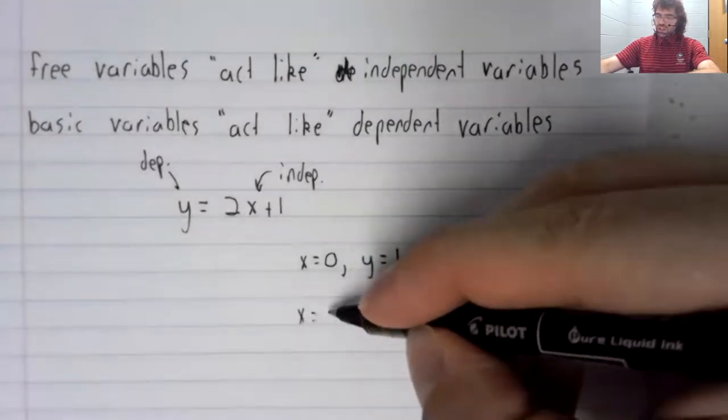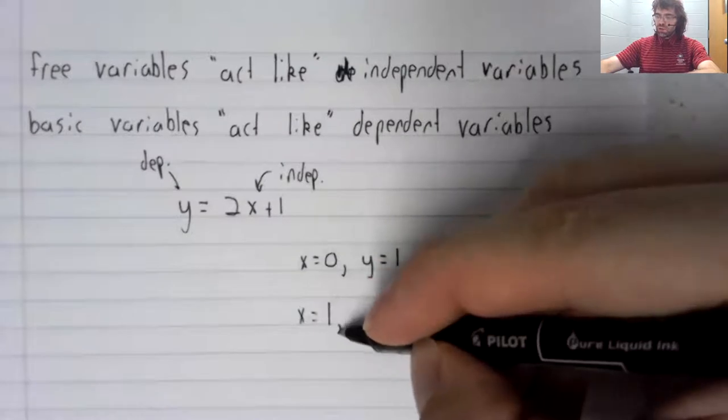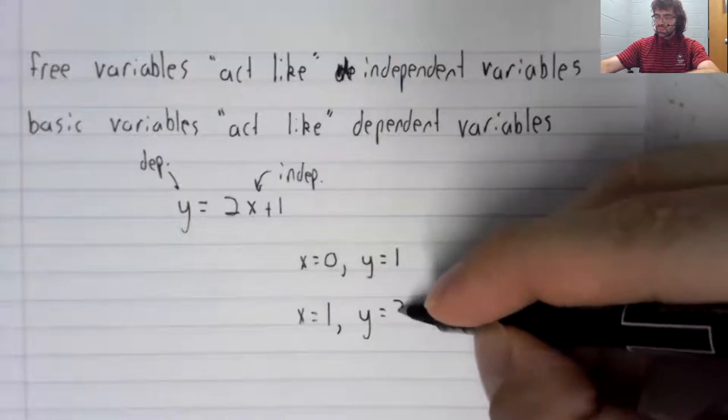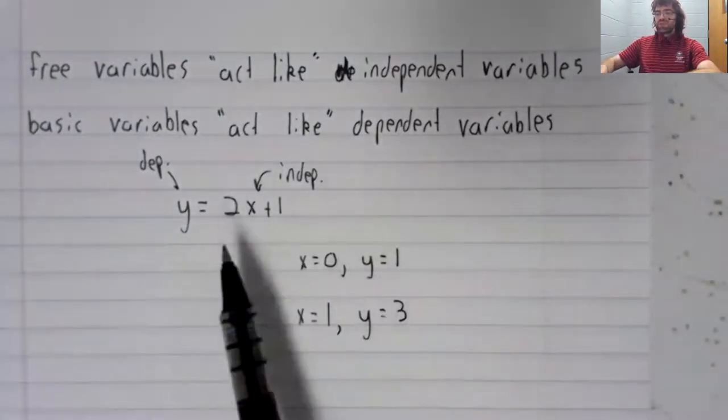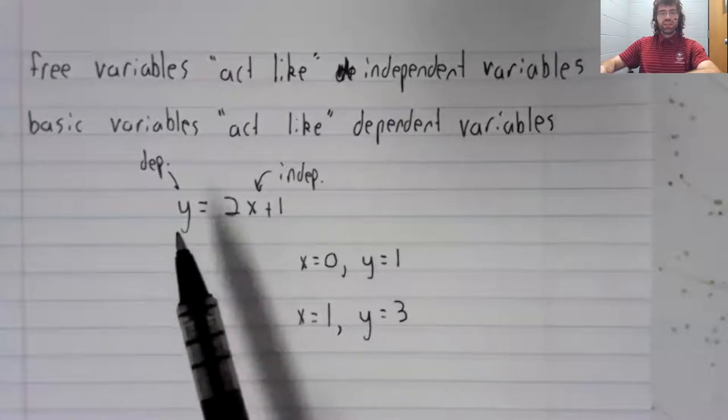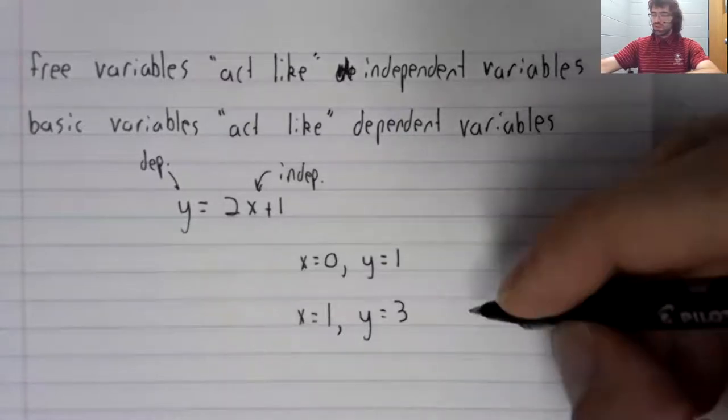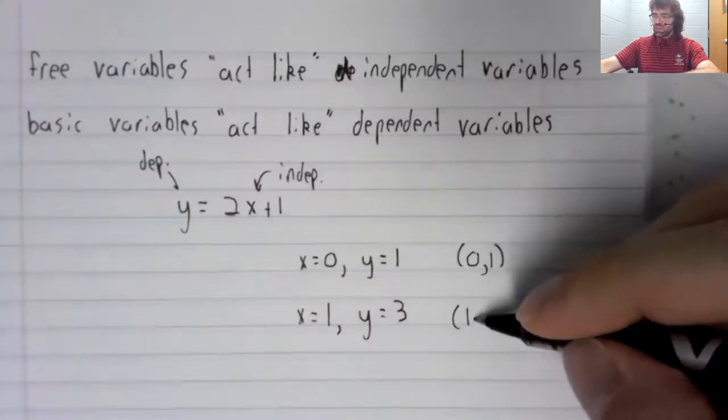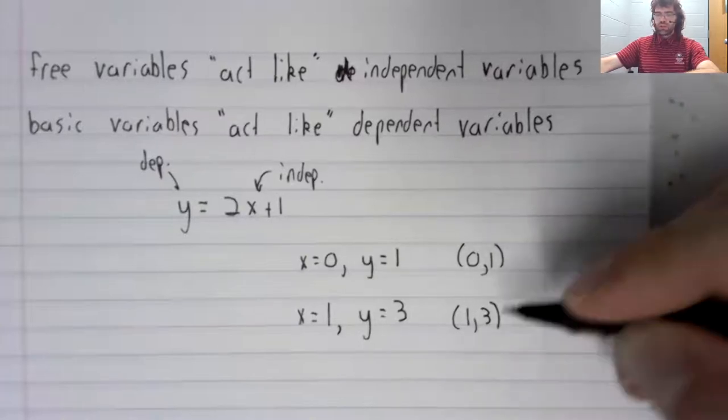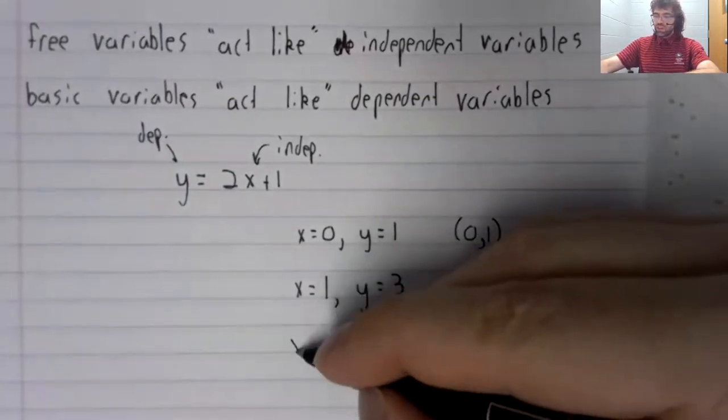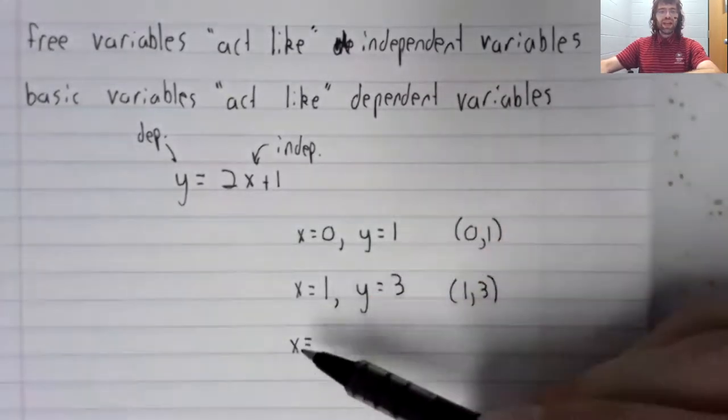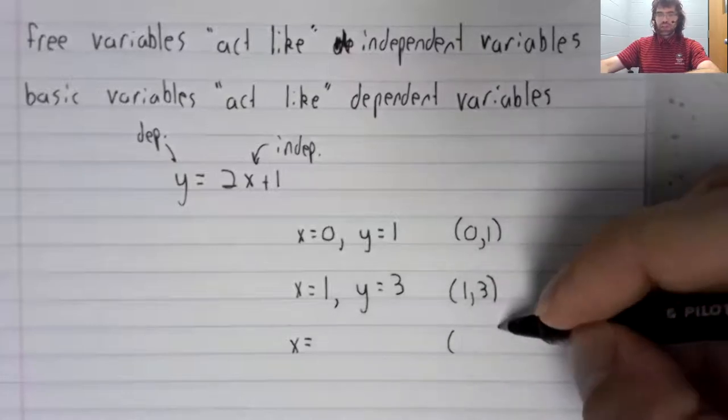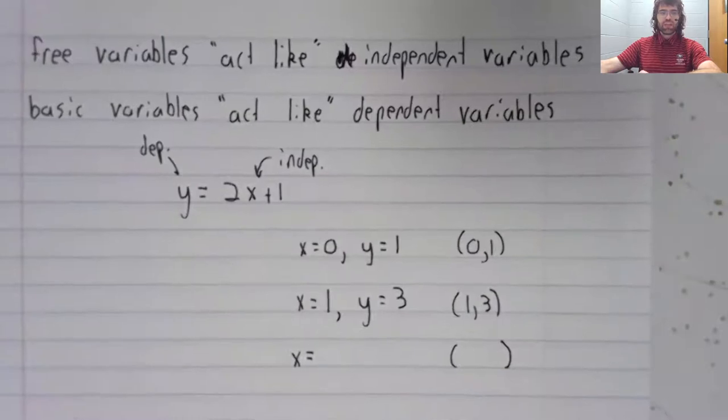The idea that the independent variable could be anything means that this equation has an infinite number of solutions. Here's a solution. Here's another solution. You can let x be any real number, and you'll get a solution from that.